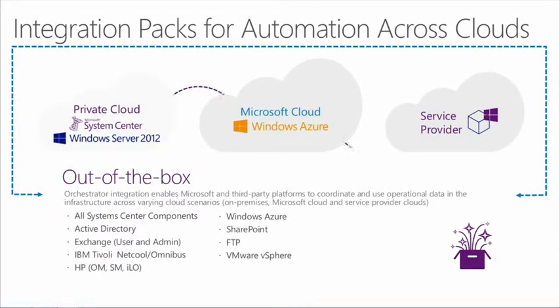Integration packs help us manage tasks and processes across multiple clouds. Within our Cloud OS vision, we see the data center as having expanding boundaries — it's no longer just in one place. We take advantage of assets as they may exist in multiple locations: on-premises or our private cloud, which is Windows Server plus System Center; our public cloud, which is Windows Azure; or even your service provider environments, which may be a mixed or proprietary environment where we can bring extensibility into the story.